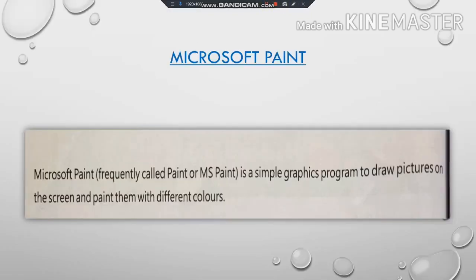Now, what is Microsoft Paint? Microsoft Paint is frequently called Paint or MS Paint. It is a simple graphics program used to draw pictures on the screen and paint them with different colors. By graphics program, we mean it shows pictures to us. Using Microsoft Paint we can draw pictures and fill colors into our pictures.